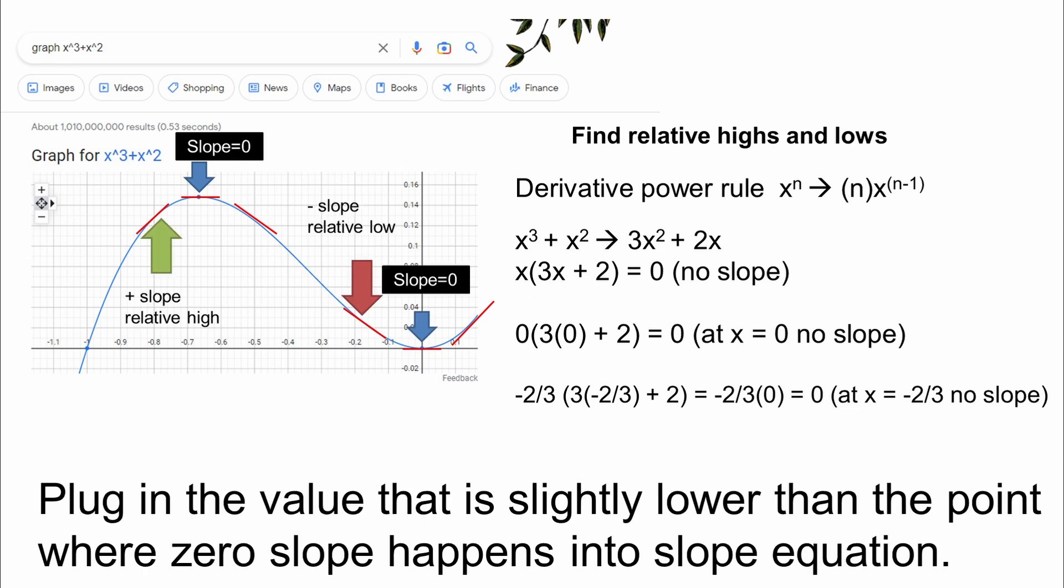To figure out this by hand, if the point is a relative high or low, you can plug in a number that is slightly lower than the number where the slope is zero. If the slope, when plugged back into the equation, is positive, then it is a relative high. And if the slope is negative, then that point is a relative low.